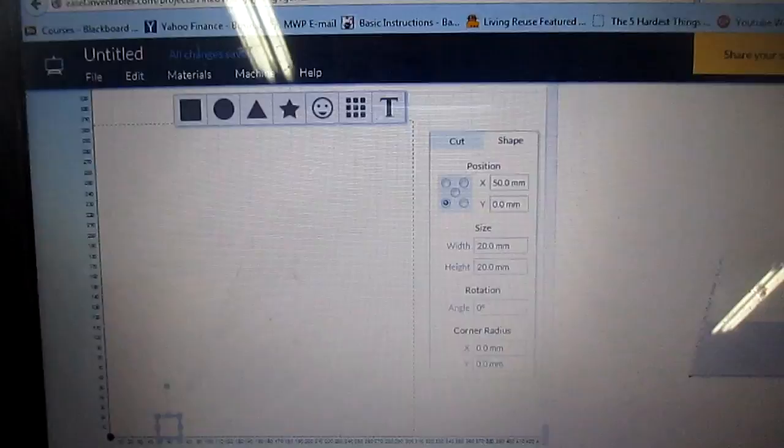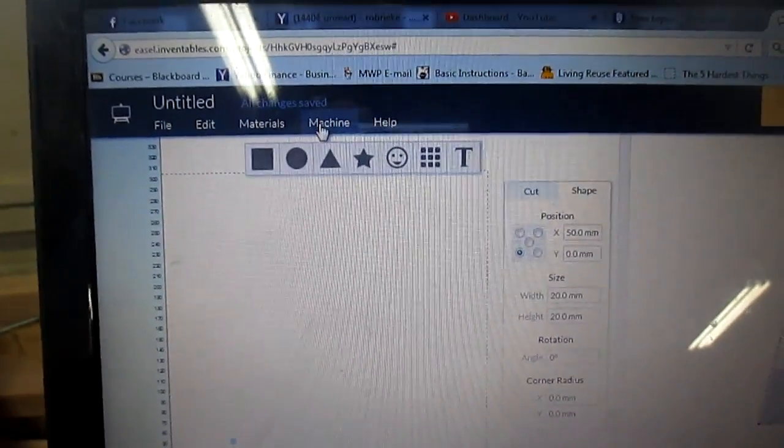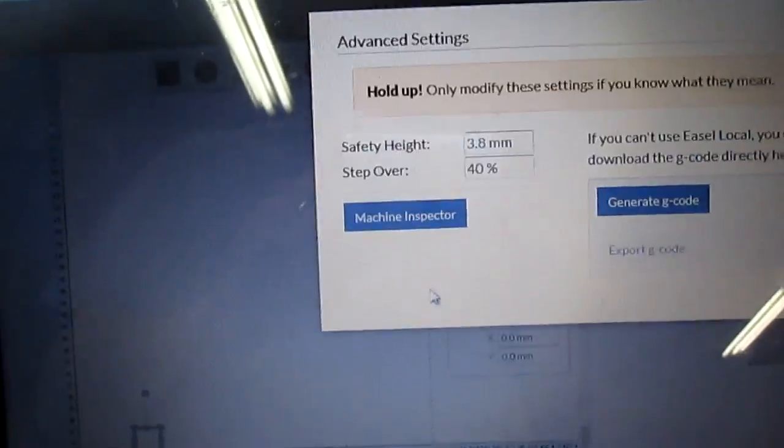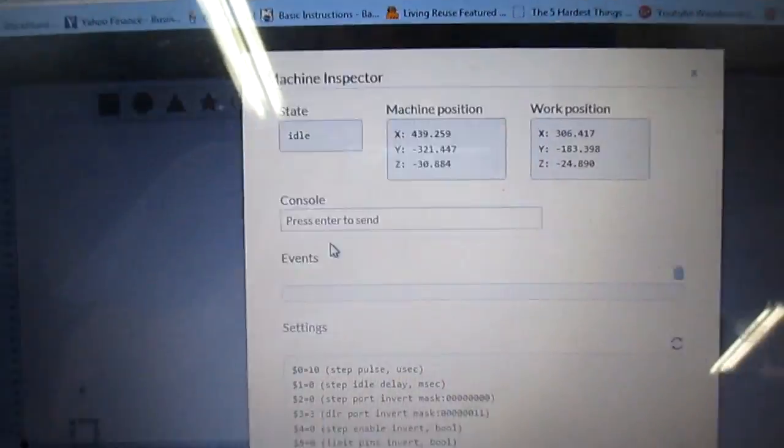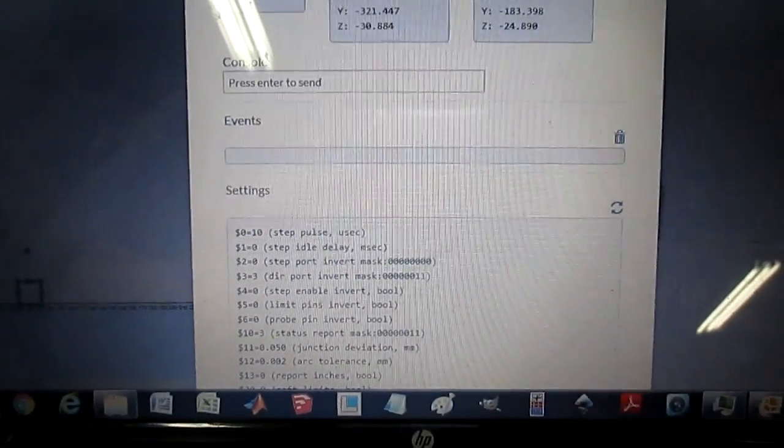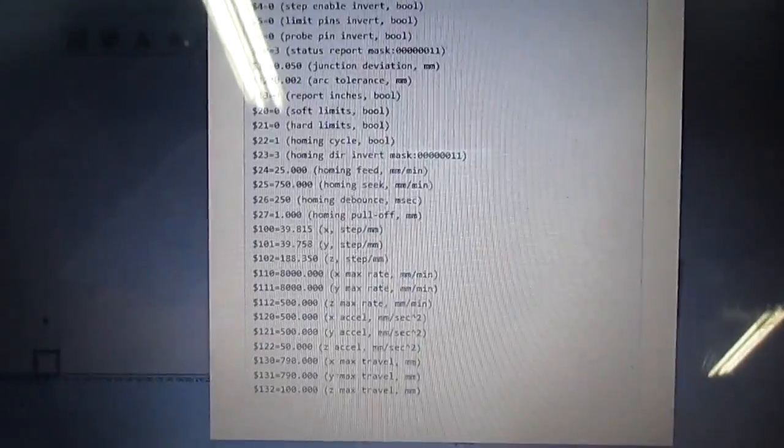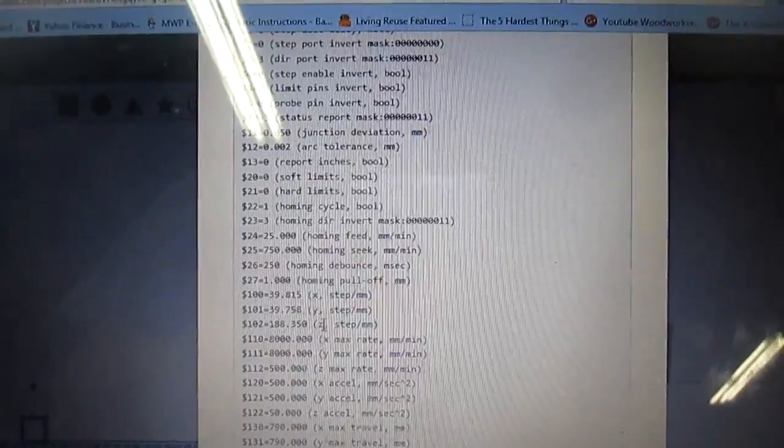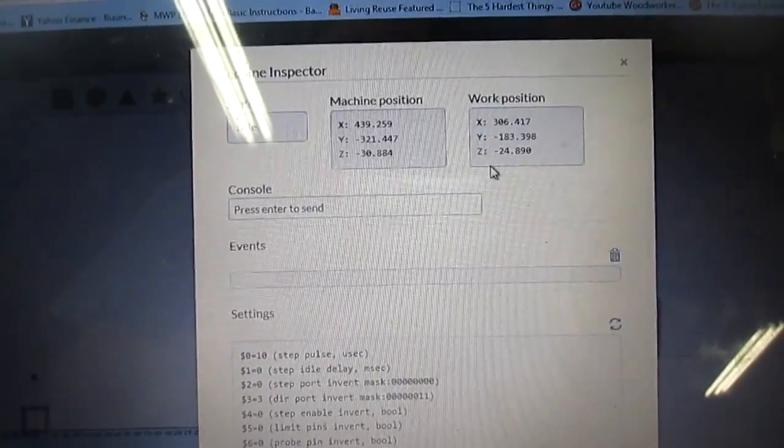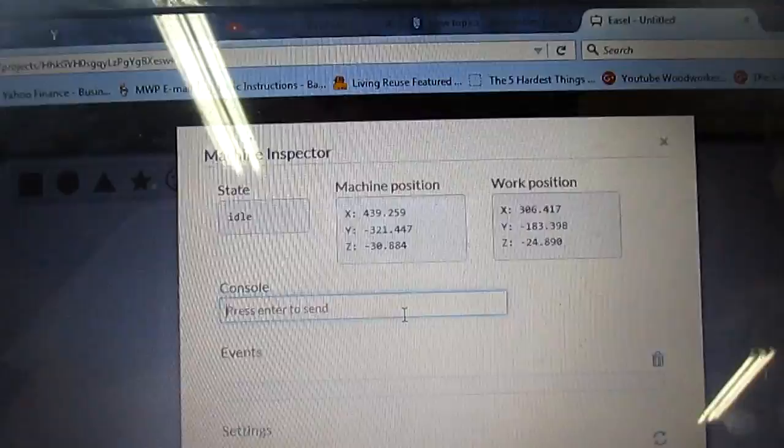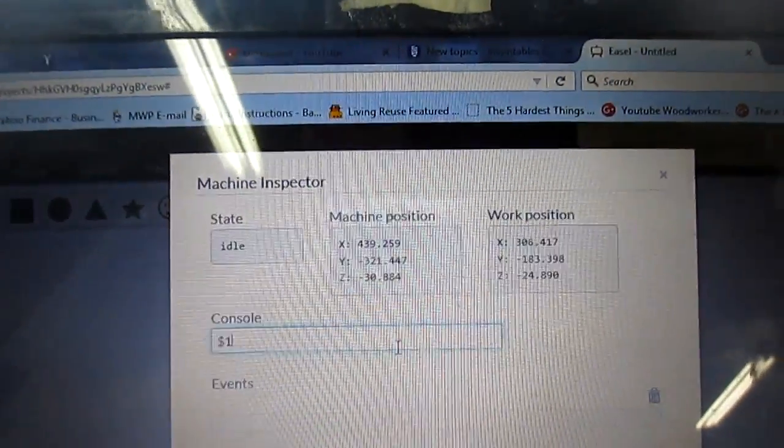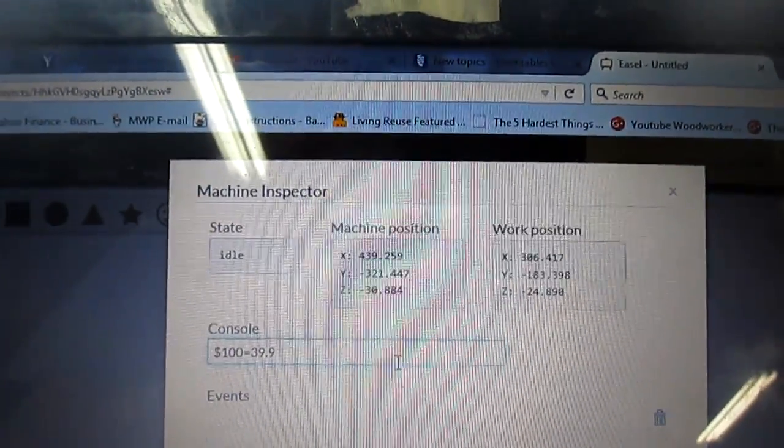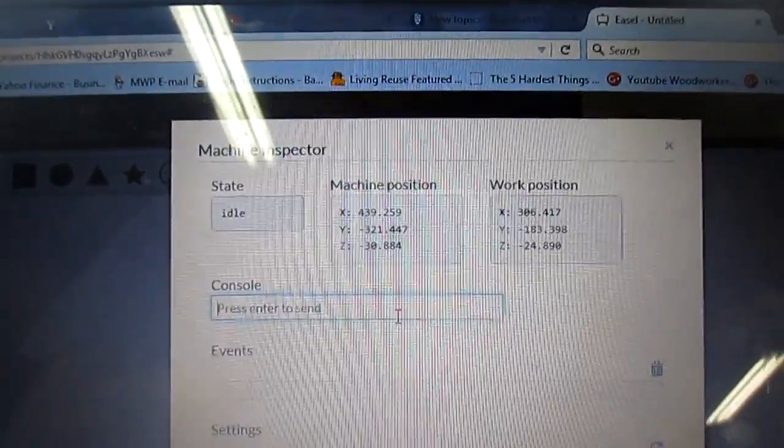So here's how you change your settings in Easel. You go up to Machine, click on Advanced down here at the bottom, and you go to Machine Inspector. That gives you your whole section here with all the different settings. What I'm interested in right now is X steps per millimeter. I'm going to repeat with Y and maybe with Z. So go up to where it says Console, and in my case, $100 equals 39.9572. Hit Enter.